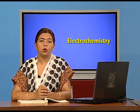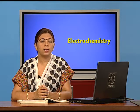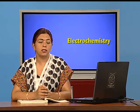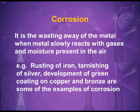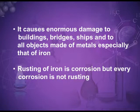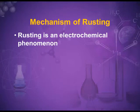Corrosion is defined as the wasting away of metal. When the metal reacts with atmospheric gases, an oxide layer or salts are formed on the metal surface. Rusting is corrosion, but every corrosion is not rusting. It is an electrochemical phenomenon.